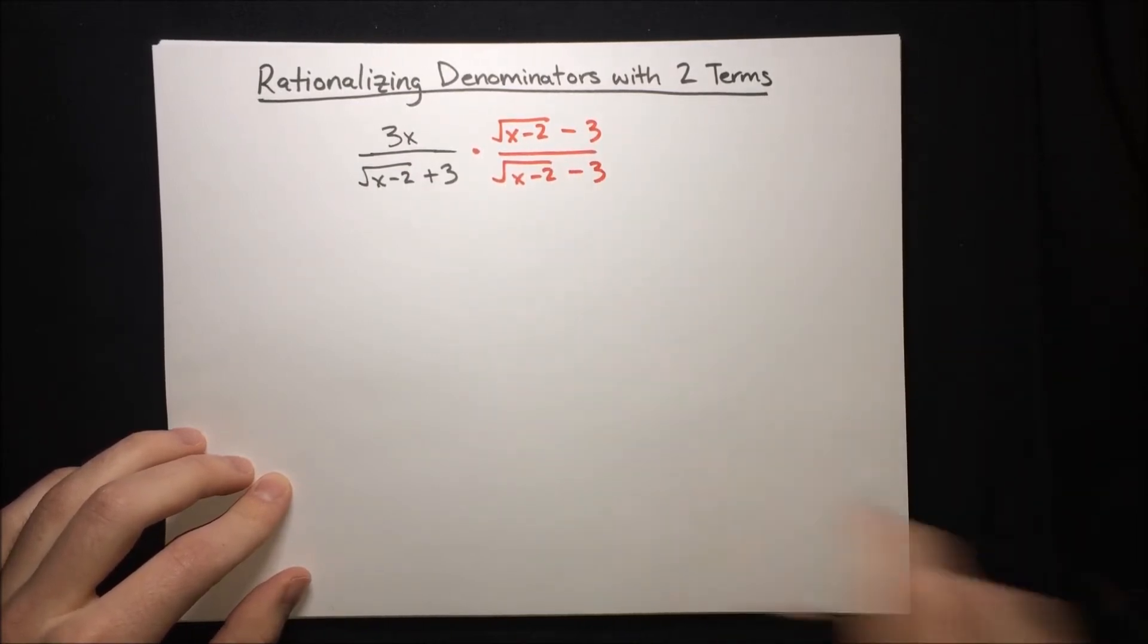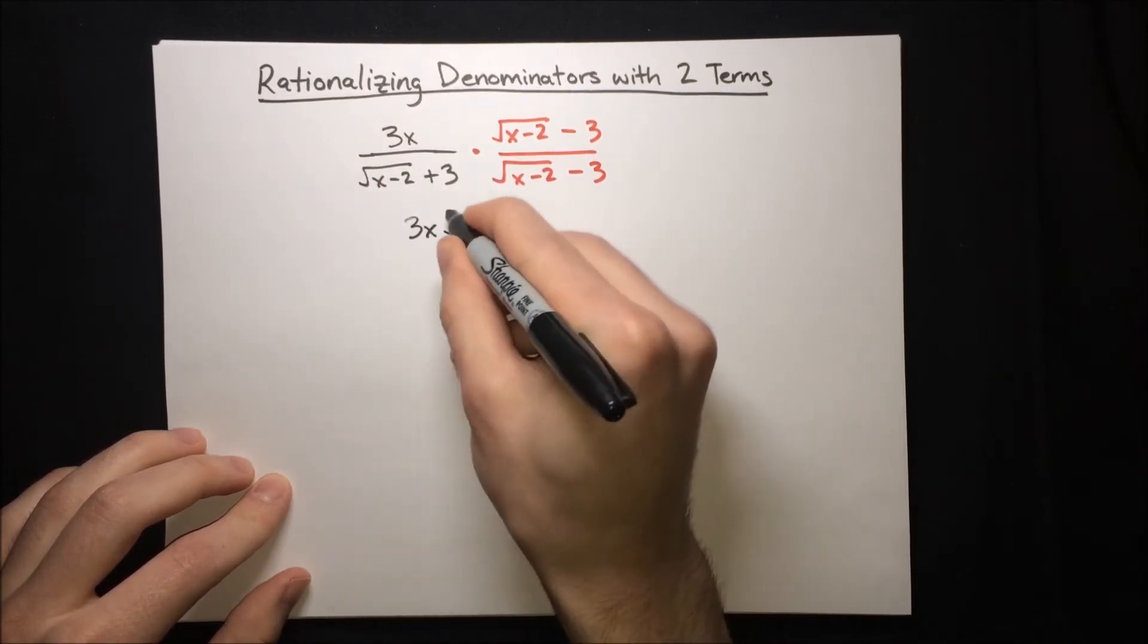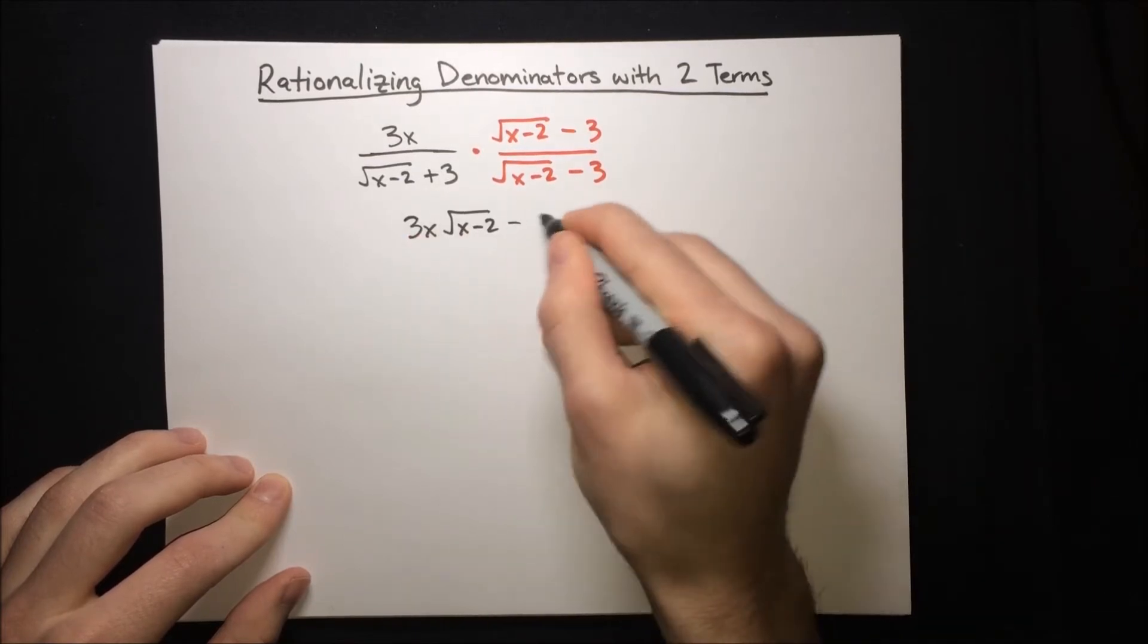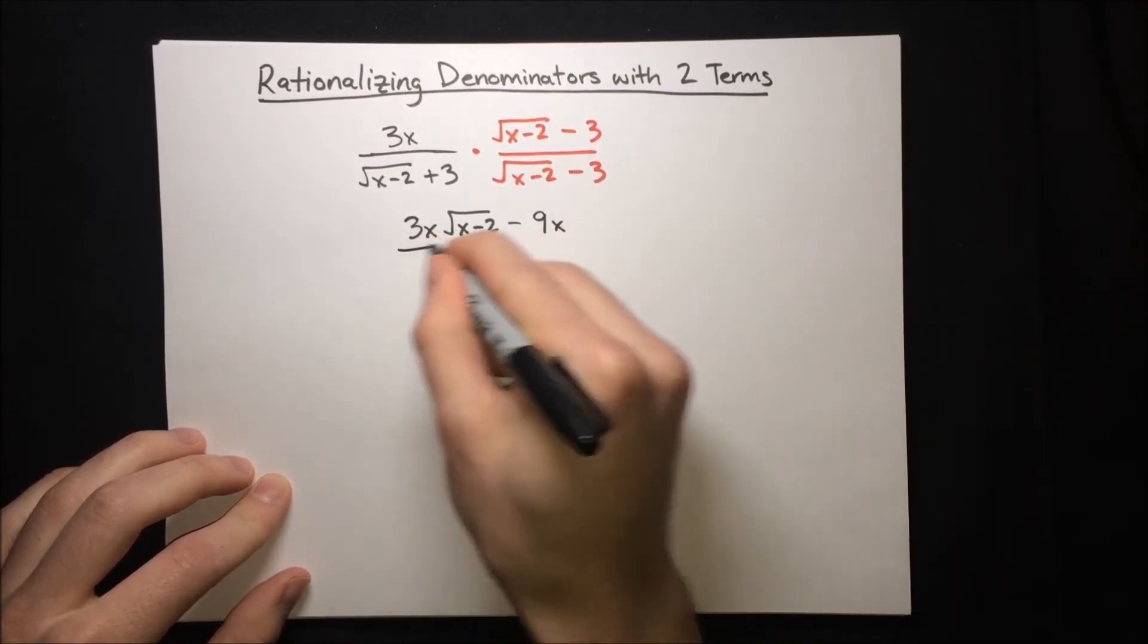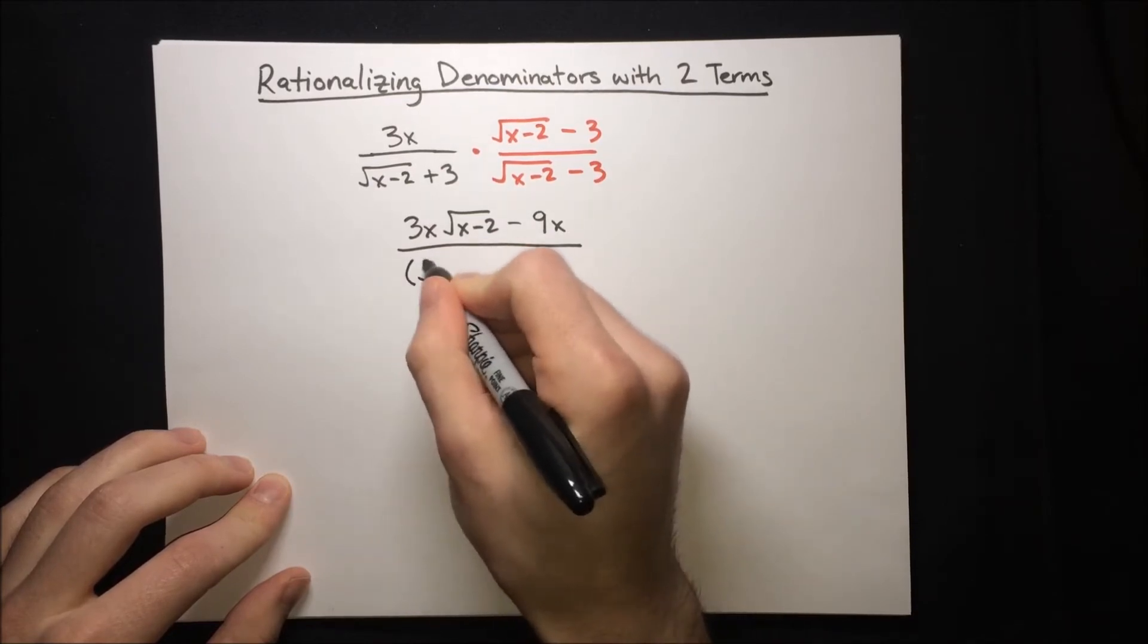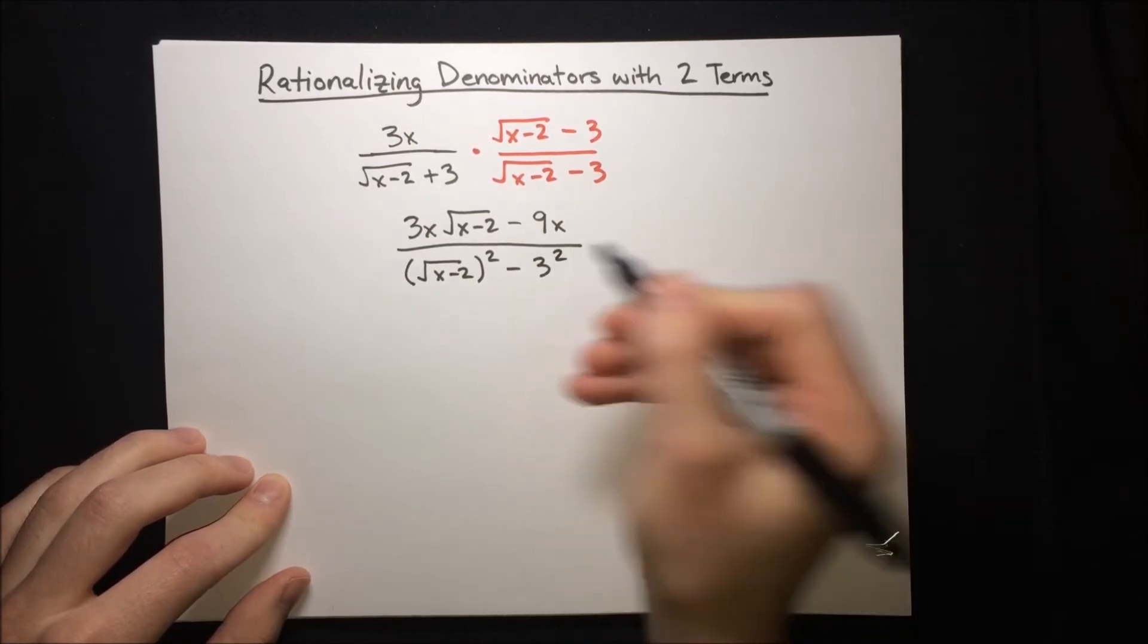So let's carry out the multiplication: 3x root x minus 2 minus 9x all over the difference of squares, so that's root x minus 2 squared minus 3 squared.